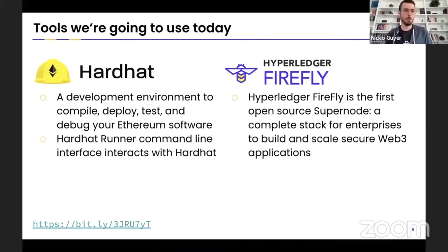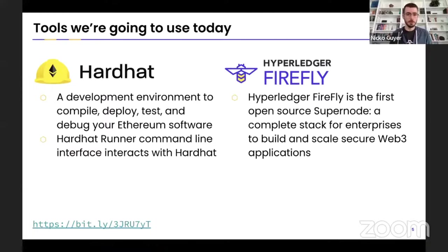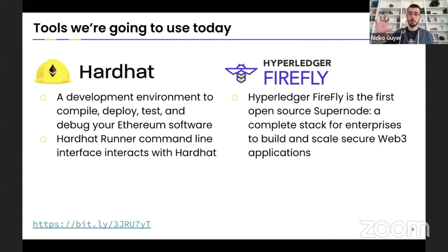Let's talk about what we're going to do in the workshop today. We're going to use some pretty cool tools. You may be familiar with Hardhat already — it's a pretty common tool for doing Ethereum development, testing, contract deployment, and that sort of stuff. So we're going to use Hardhat, we're going to compile a custom smart contract, deploy it to a blockchain node running on our machines, and we're going to use that contract with Firefly.